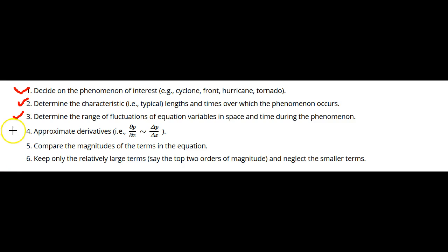Approximate derivatives. That is, the partial of p with respect to x would become delta p over delta x, where they're roughly estimated. Compare the magnitudes of terms in the equation, and then keep only the relatively large terms, say the top two orders of magnitude, and neglect the much smaller terms.